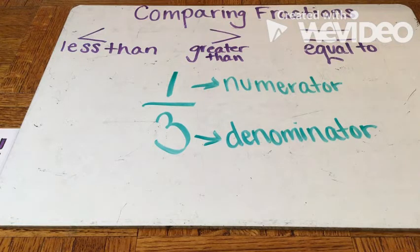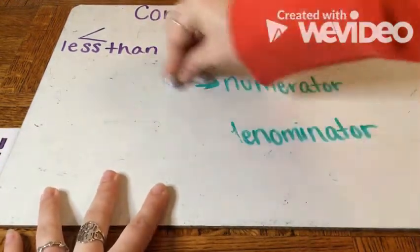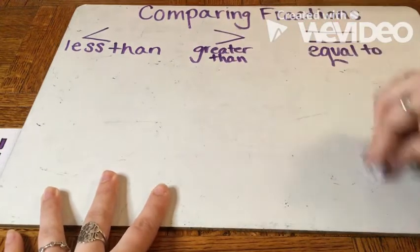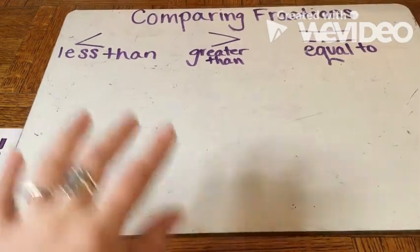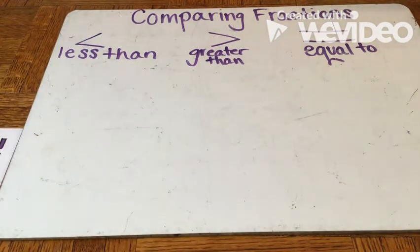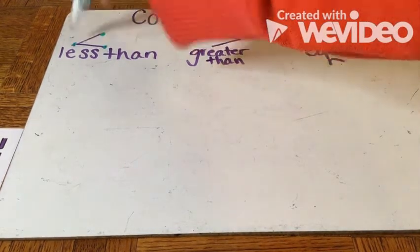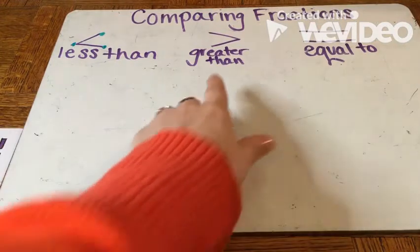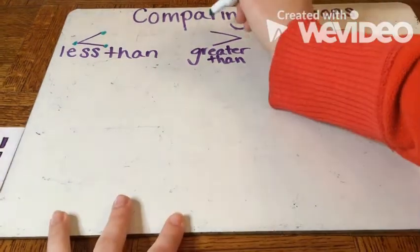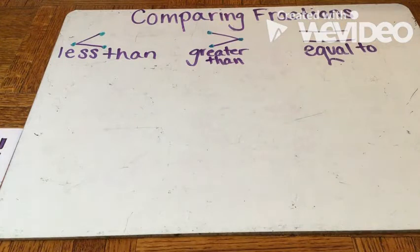Alright, so today we are going to talk about comparing fractions. Earlier this year we talked about comparing two-digit and three-digit numbers, and we are going to use that knowledge or our schema to help us compare fractions. And just as a quick review, remember our less than sign opens to the left, so our two dots would be towards the left. And then we have our equal sign, which means the two numbers are the same.